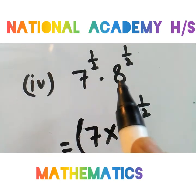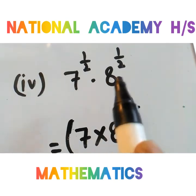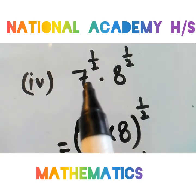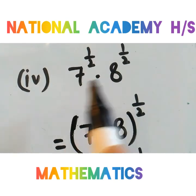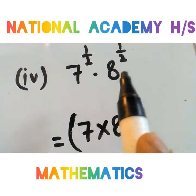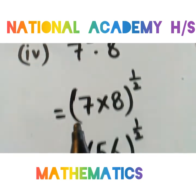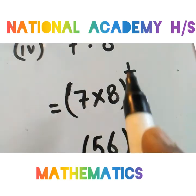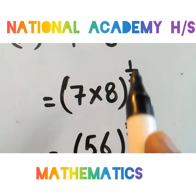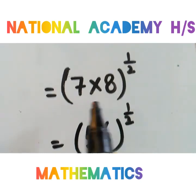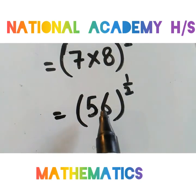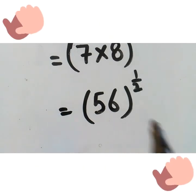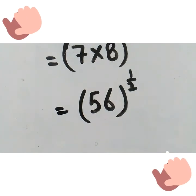Last part है 7 raise to power 1 by 2 into 8 raise to power 1 by 2। Bases अलग हैं लेकिन power same है — multiply में bases को multiply कर सकते हैं जब power same हो। तो 7 into 8 whole power 1 by 2 — 7 into 8 = 56। Answer: 56 raise to power 1 by 2।